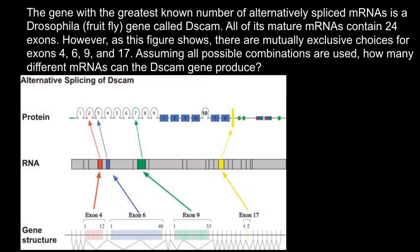Unlike the human gene, which can produce tens of variants due to alternative splicing, this gene in Drosophila can produce tens of thousands of different variants of messenger RNA and therefore variants of proteins. The total number of genes in Drosophila is about 15,000, and the number of alternative variants of this one gene exceeds the total number of genes in the insect.